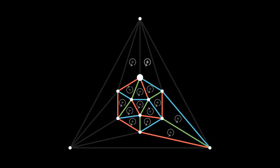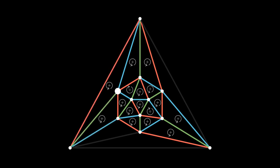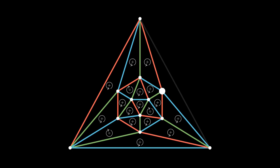Around this vertex the other two must be counterclockwise. Around the next vertex the other two must also be counterclockwise. Around another vertex, everything so far is counterclockwise, so the remaining face must be clockwise. Around yet another vertex, three are counterclockwise and one is clockwise, so the remaining must be counterclockwise. And around the last vertex, all four are counterclockwise, so the last face must be clockwise. And we've done it.